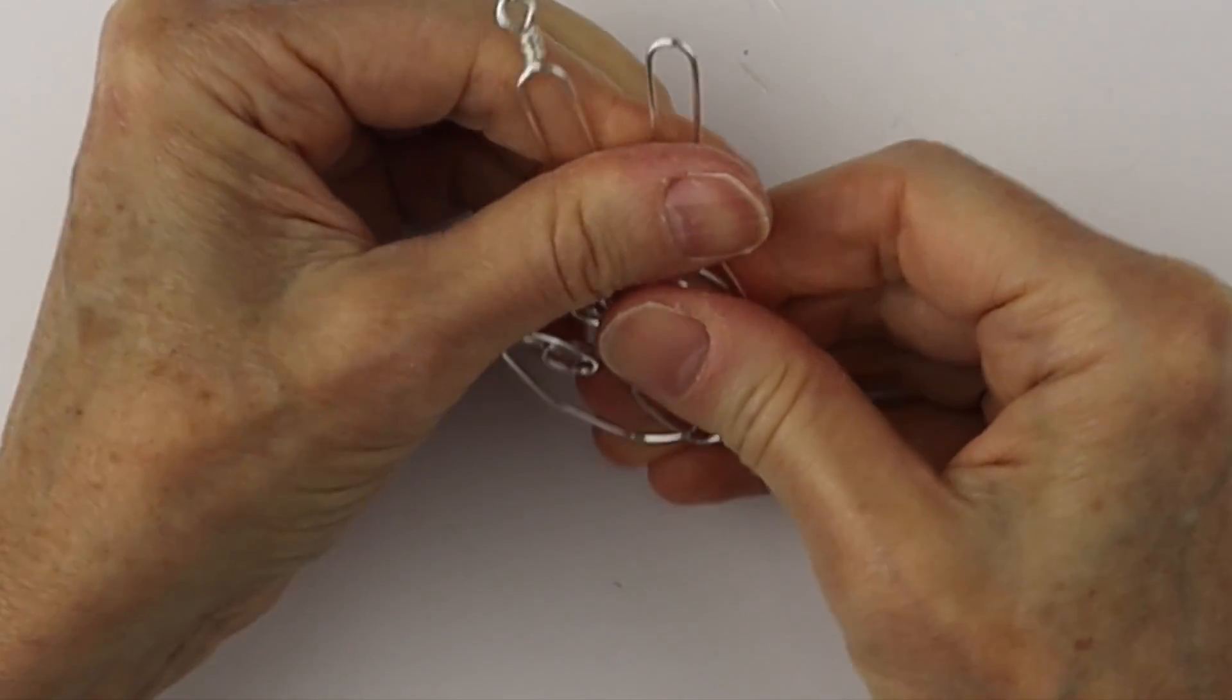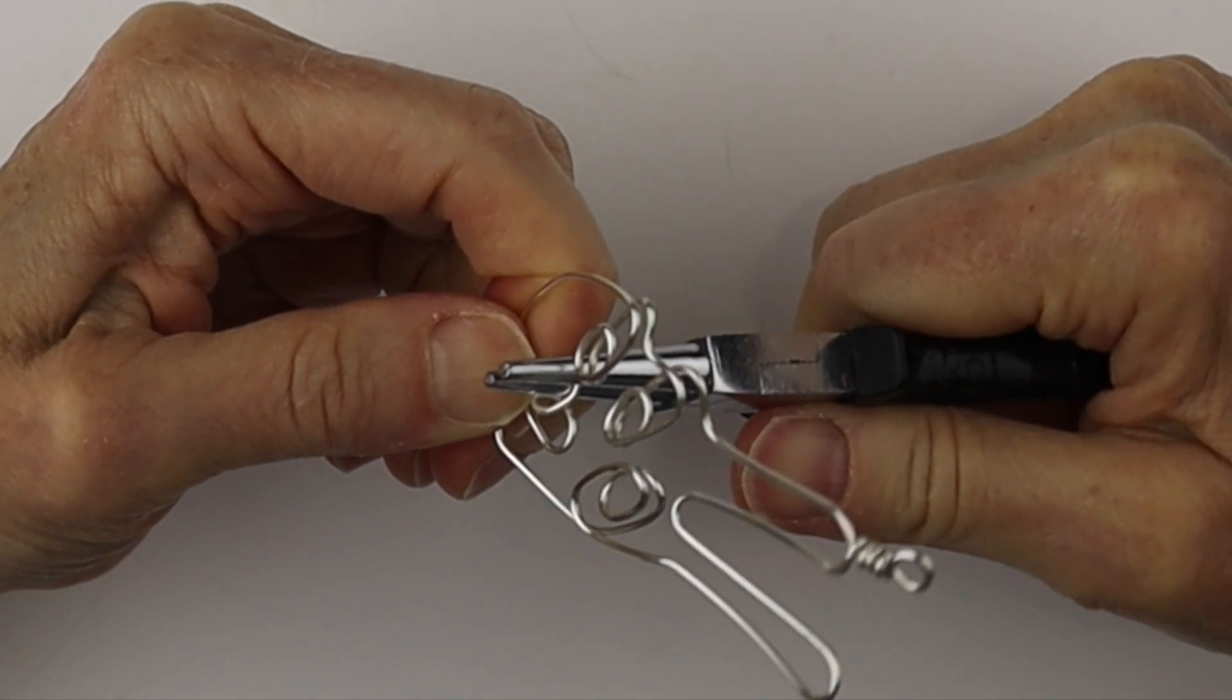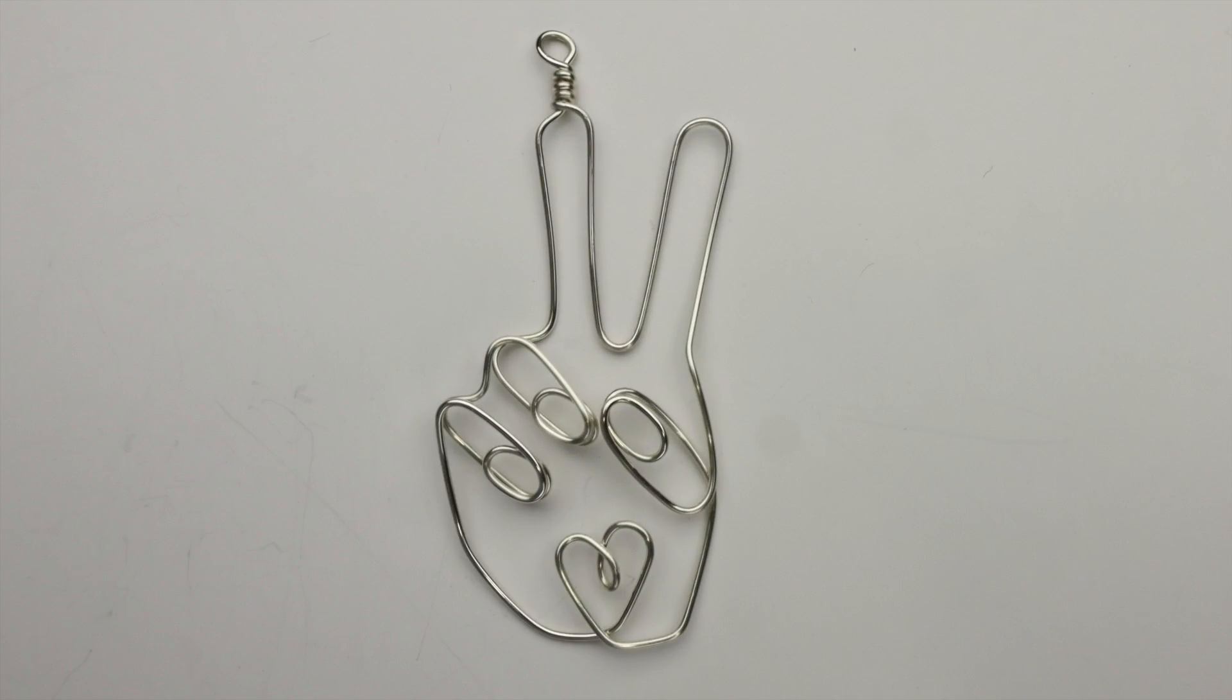And now we could do any adjustments that you need by hand. And you could even hammer it a bit if you want. And you can go in with your pliers to make final adjustments. So there's our first design for the peace sign.